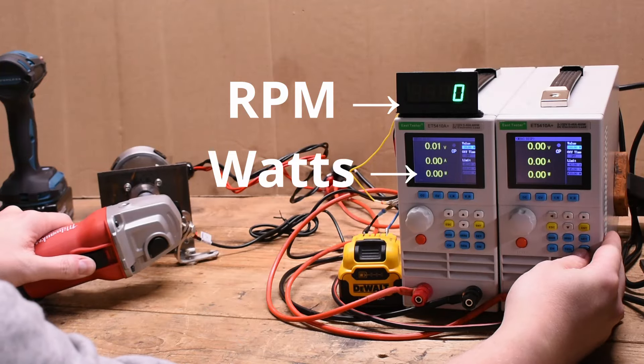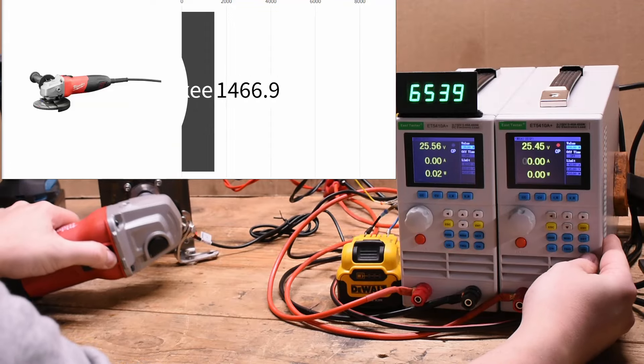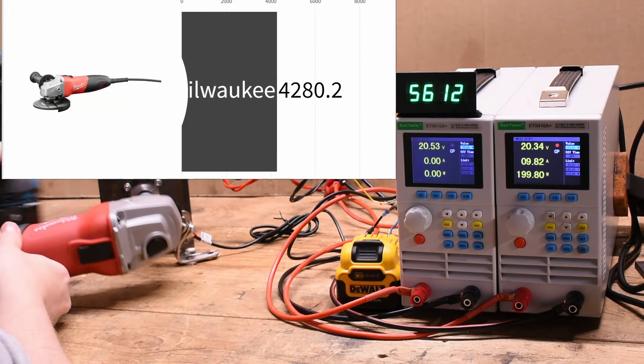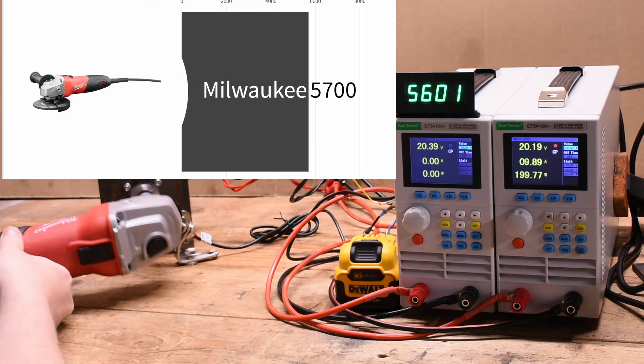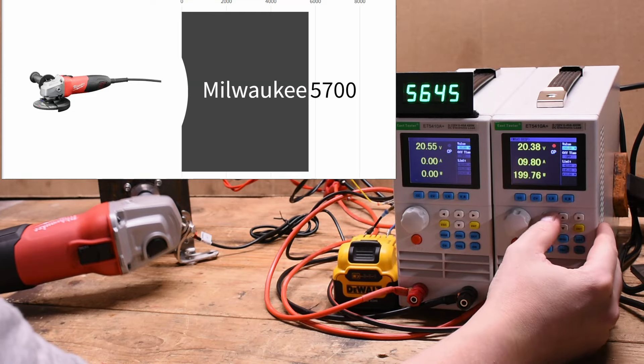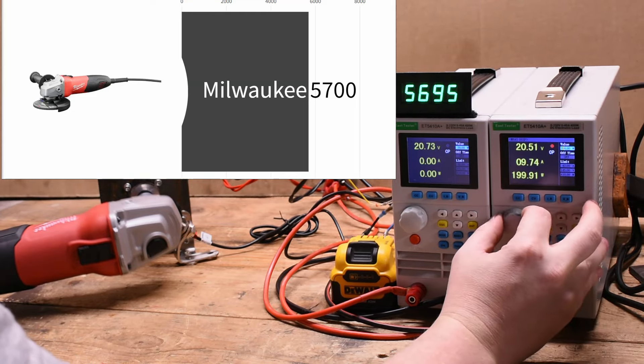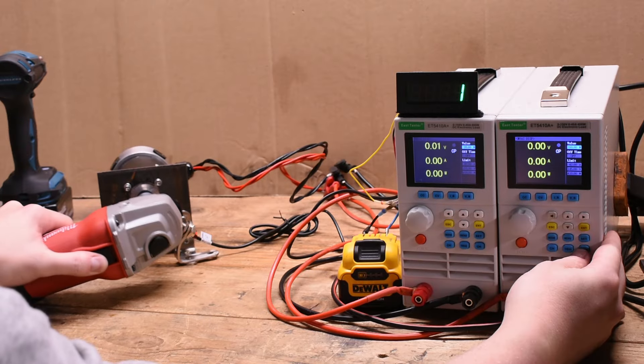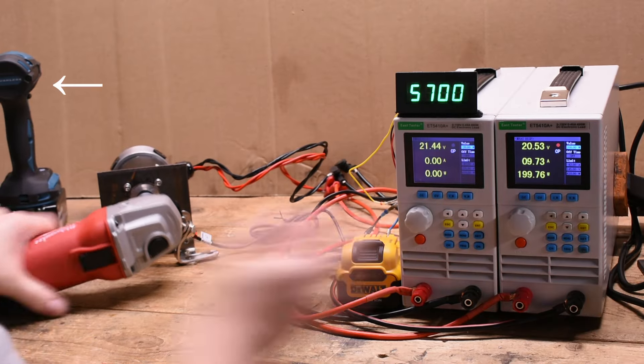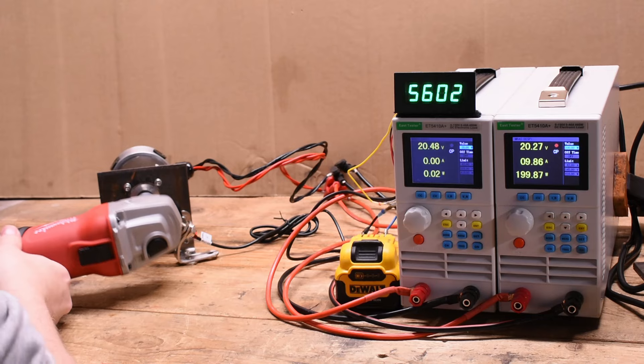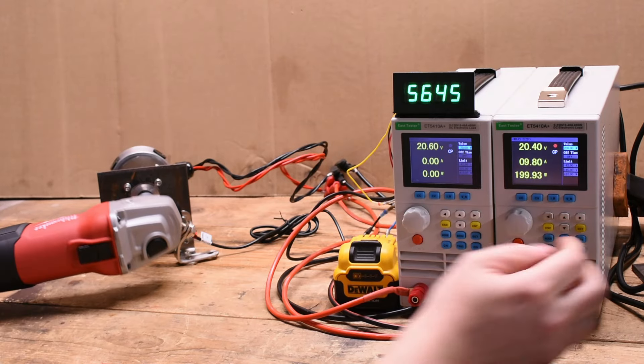And the Milwaukee corded settles into about 5700 RPM under this load. Now is that good? We have no idea yet. We're also seeing a hefty amount of vibration from this thing despite our setup being perfectly true on the motor.